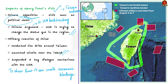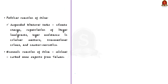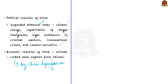Politically, China suspended bilateral talks on key matters such as climate change, repatriation of illegal immigrants, legal assistance in criminal matters, and transnational crimes. Economically, the response was minimal — China just imposed some curbs on Taiwanese exports — because China itself is heavily dependent on Taiwanese semiconductors and cannot afford a full economic confrontation. These were the major impacts of Nancy Pelosi's visit and China's response.